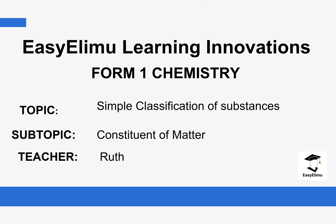Previously we were talking about temporary, chemical and permanent changes. We were able to discuss each group and some of the characteristics of these changes, and we also looked at some examples of components that have undergone these changes. You can go and watch the previous videos of those lessons.